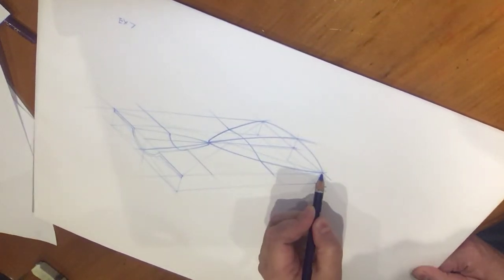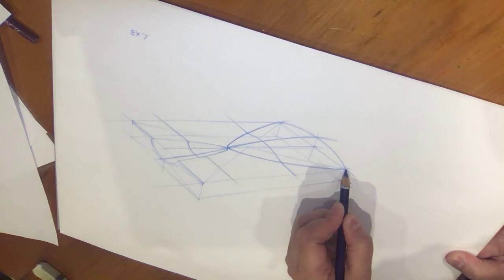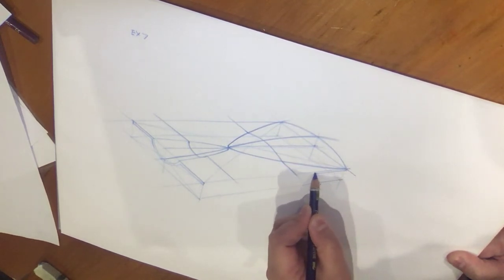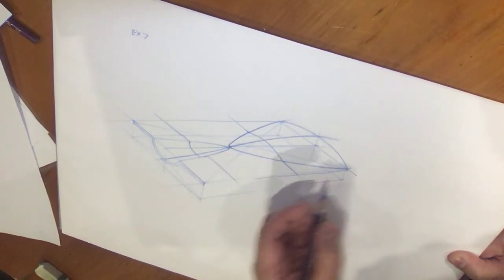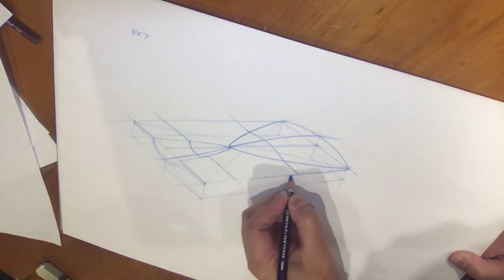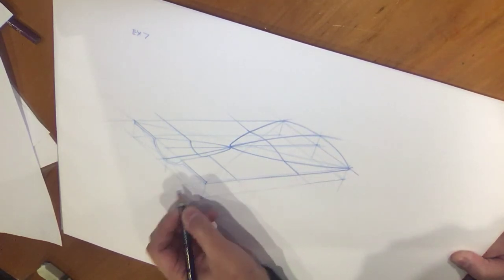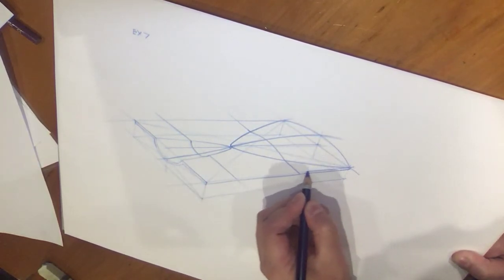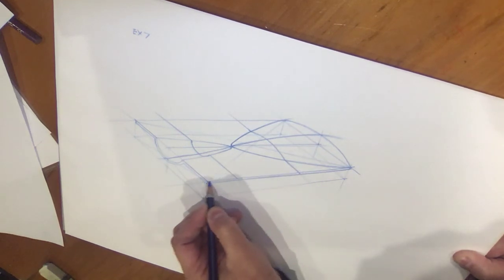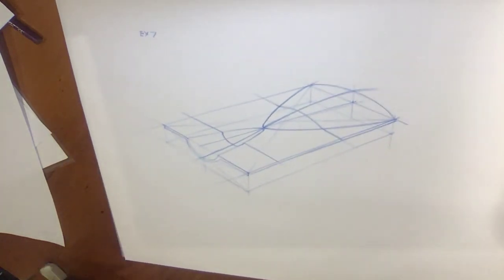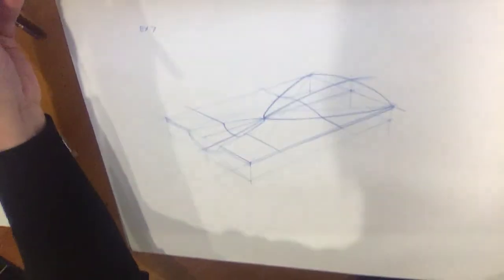I'll give this object some depth. My blue pencil is becoming a little bit blunt, but once we render it and do all these construction lines without liner, it will all become a lot clearer.